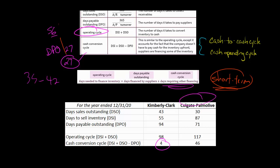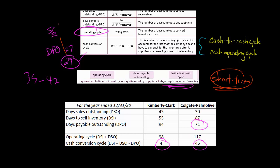Colgate-Palmolive, on the other hand, has an operating cycle of 117 days — that's the time to sell inventory and collect cash from customers. When we subtract their days payable outstanding of 71, we get a cash conversion cycle of 46 days. So they have to figure out 46 days of financing. Essentially, when the supplier wants to be paid, they don't yet have the money from the customer, so they have to rely on short-term borrowing or other financing to cover those 46 days until they receive cash from the customer.